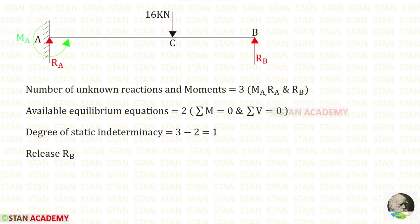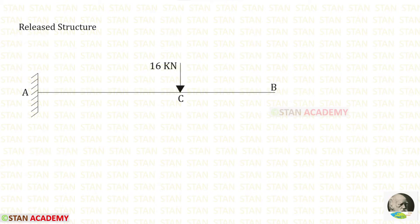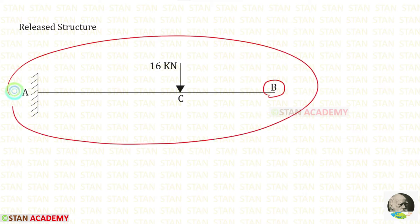We have to make this beam statically determinate, so we need to remove one of the unknowns. Let us release RB. I have removed RB from point B, so point B becomes a free end. Previously it was a propped cantilever beam, but now it has become a cantilever beam.